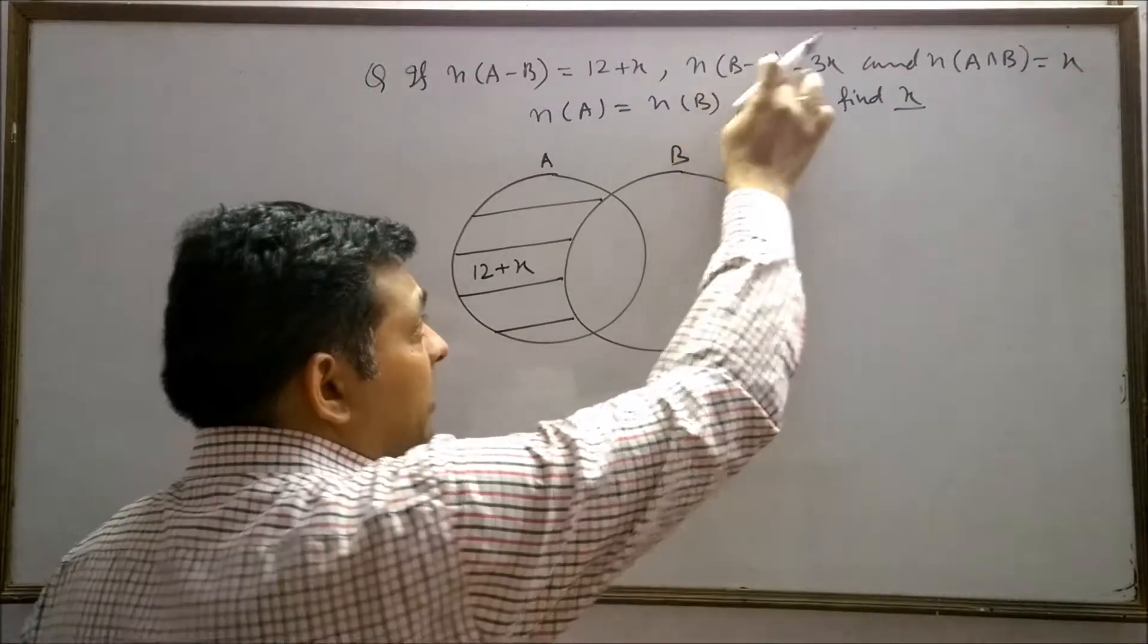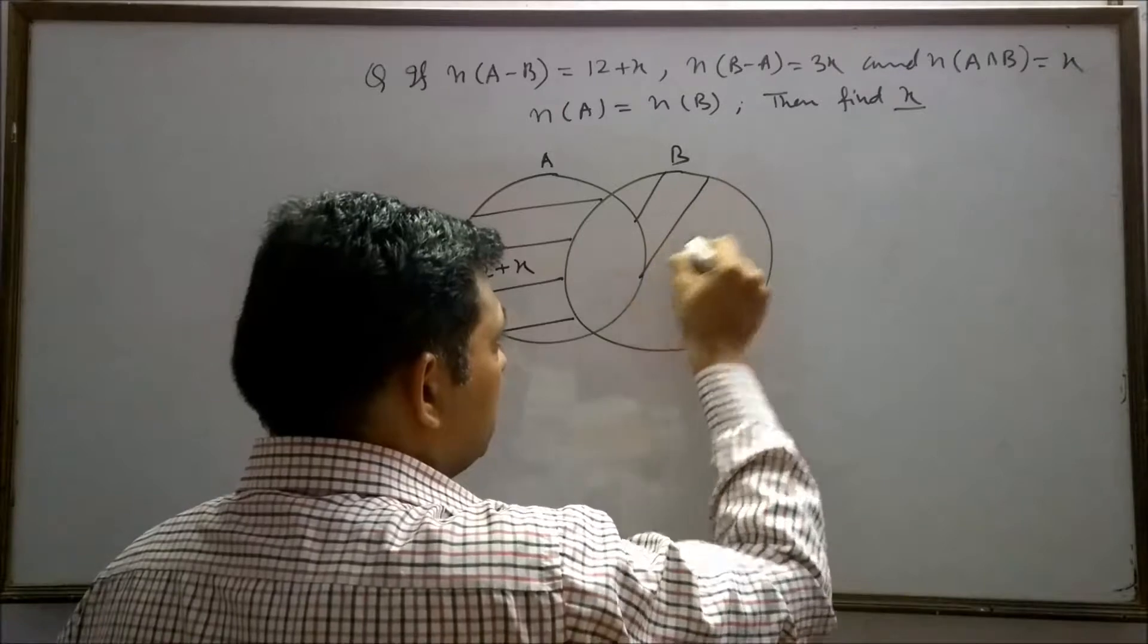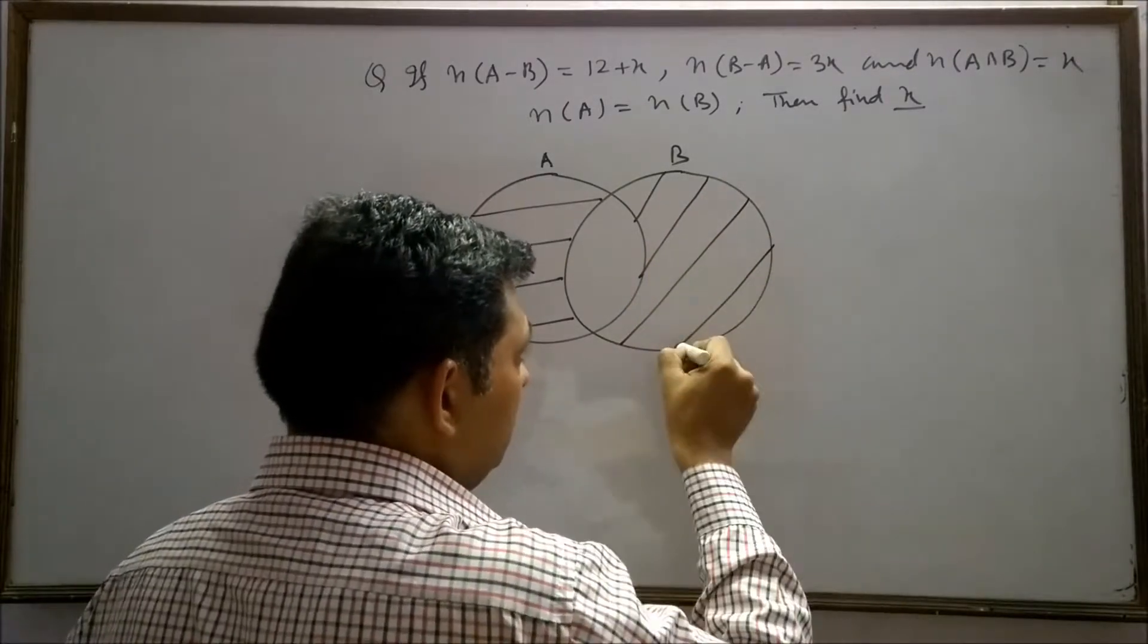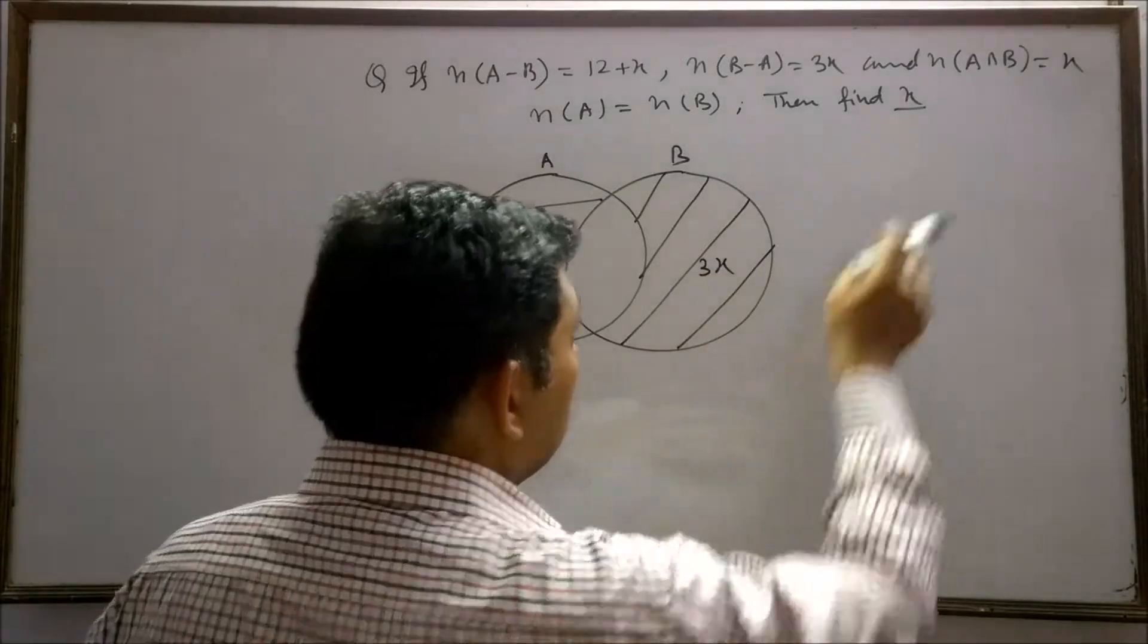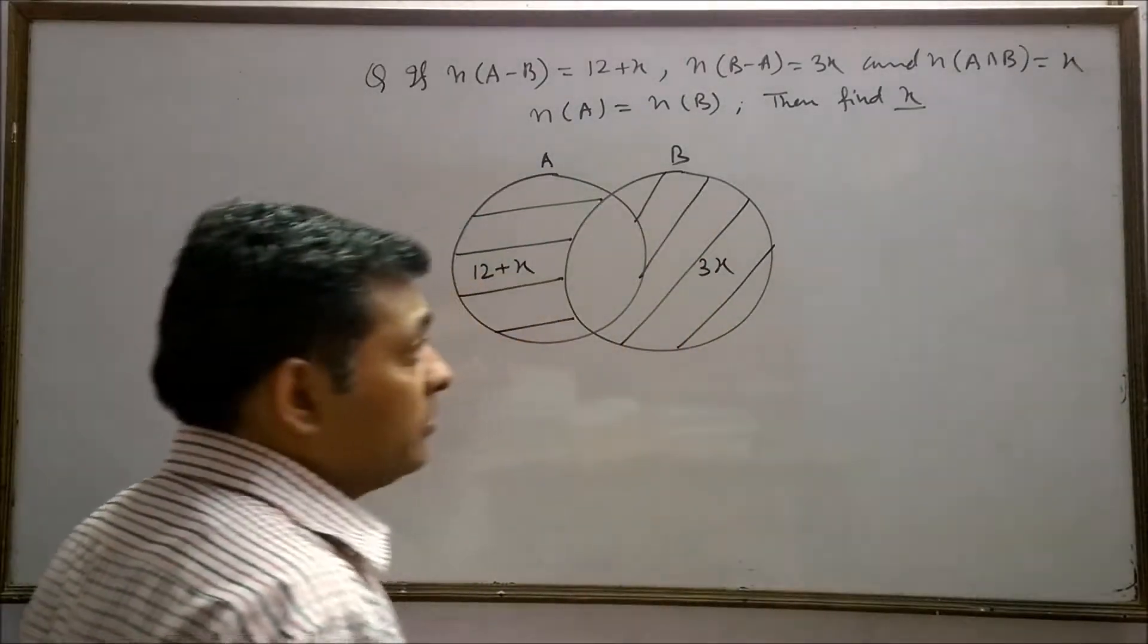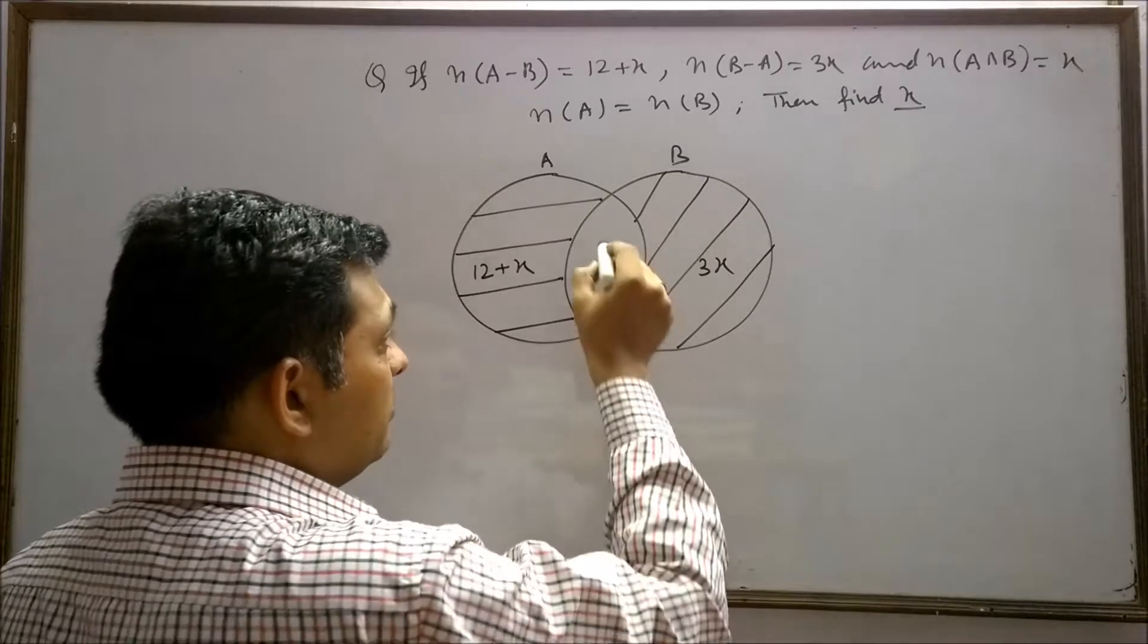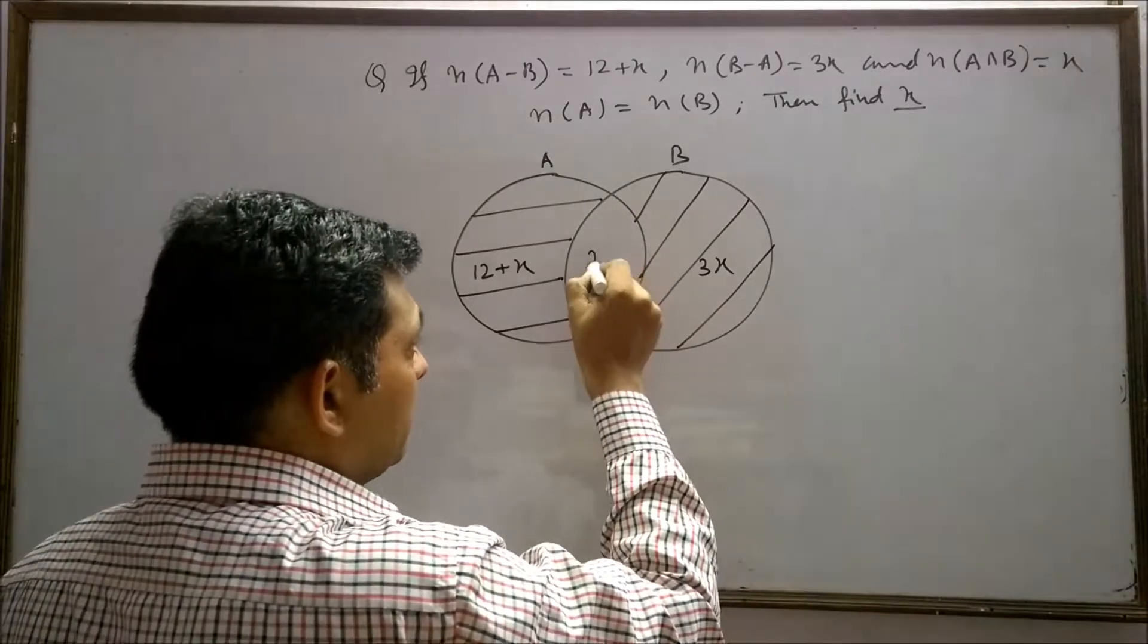And B minus A given to us 3x is this shaded region which contains 3x element. n(A∩B) is equal to x. It means this set contains x elements.